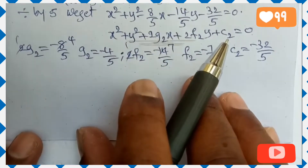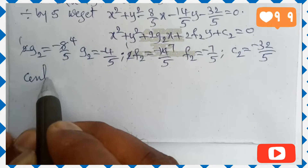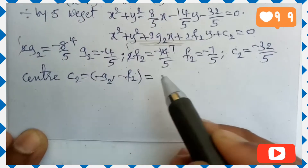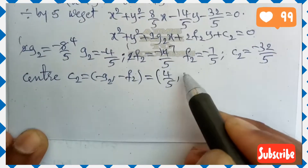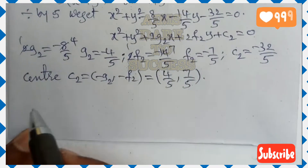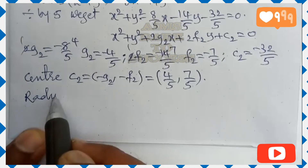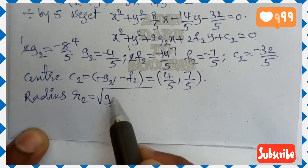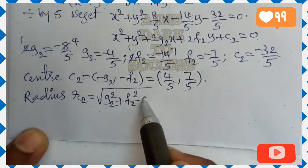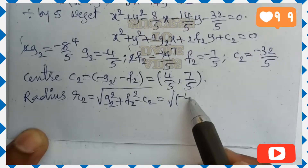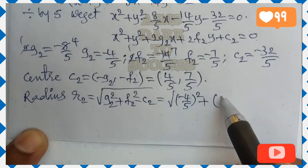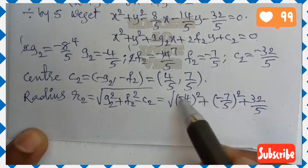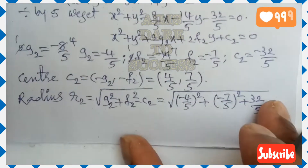Center C₂ = (−g₂, −f₂) = (4/5, 7/5). For the radius: r₂ = √(g₂² + f₂² − c₂) = √((−4/5)² + (−7/5)² − (−32/5)) = √(16/25 + 49/25 + 32/5).